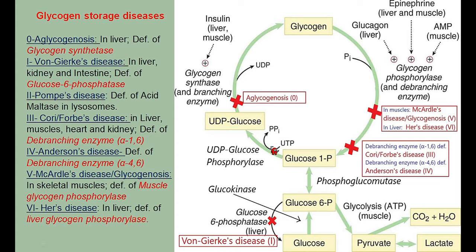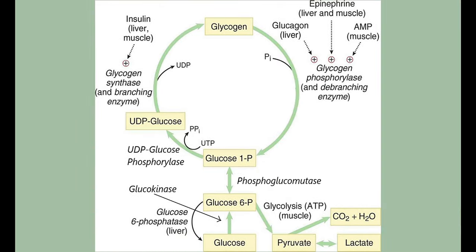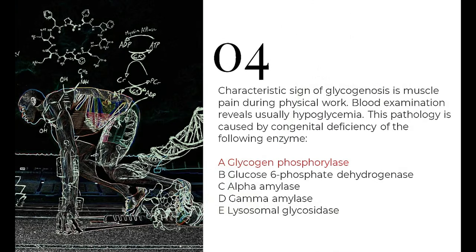Returning to the question: glycogenosis in muscle with muscle pain during physical work and hypoglycemia points to McArdle's disease — deficiency of muscle glycogen phosphorylase enzyme.